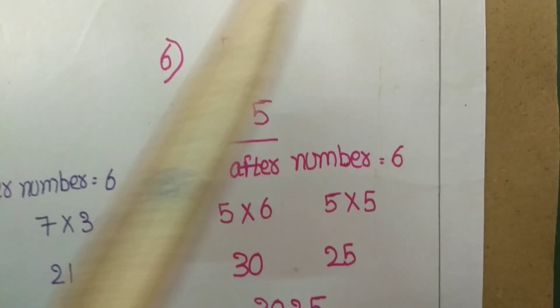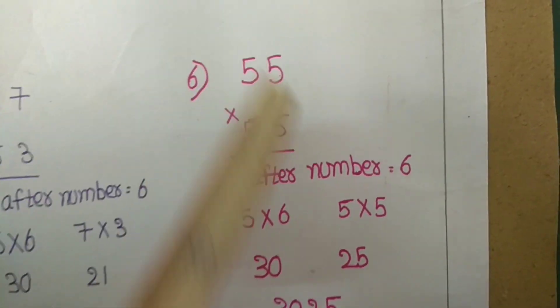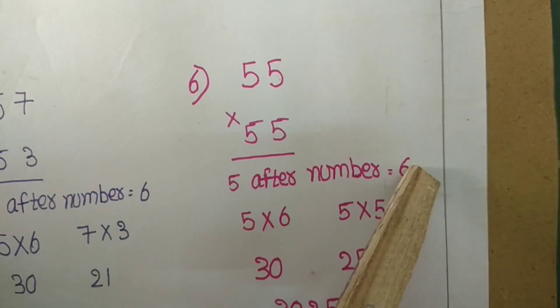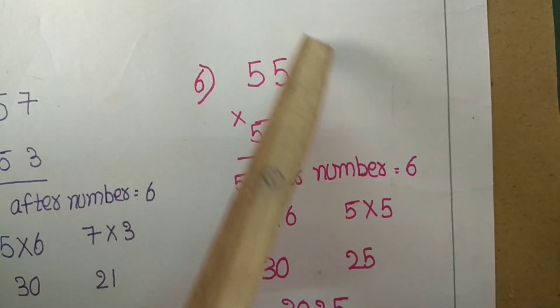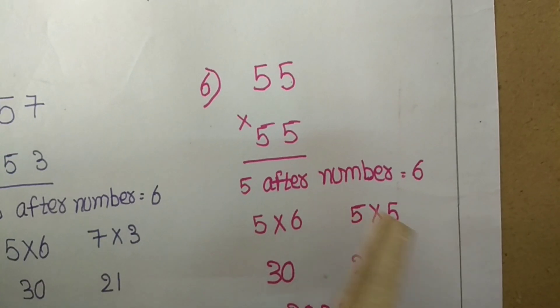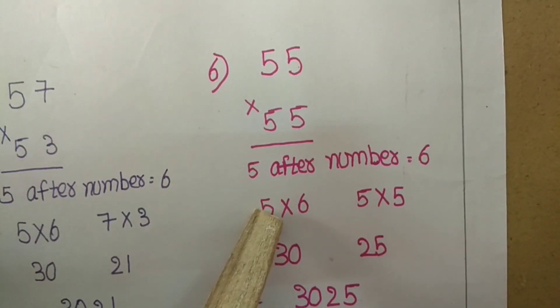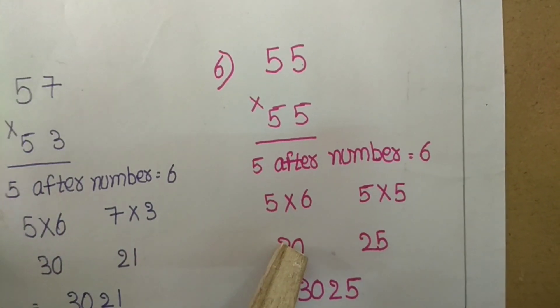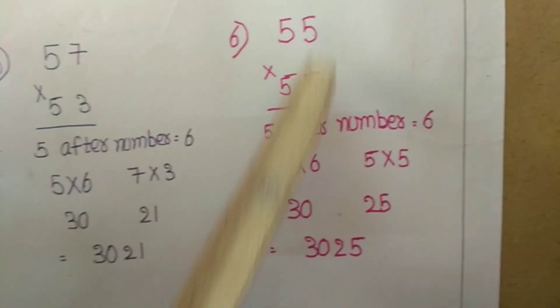Example: 55 into 55. The tens digit 5, the next number is 6. The units digits multiplication: 5 into 5 is 25. 5 into 6 is 30. Now the answer is 3025. Another example.